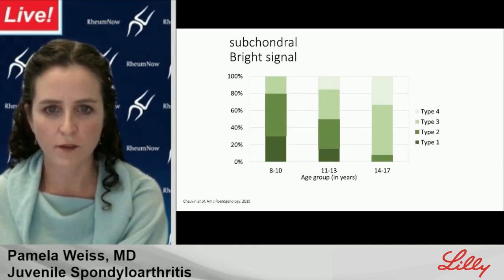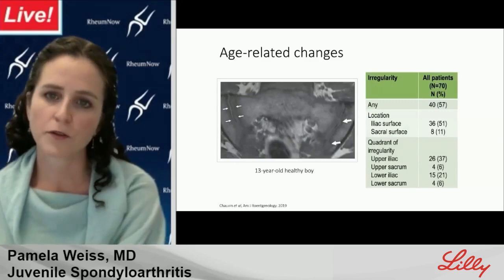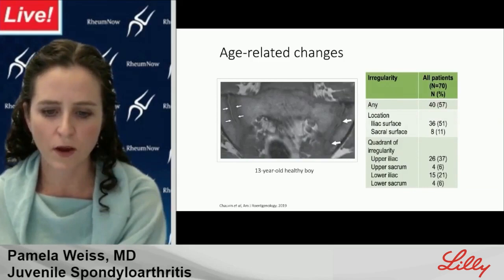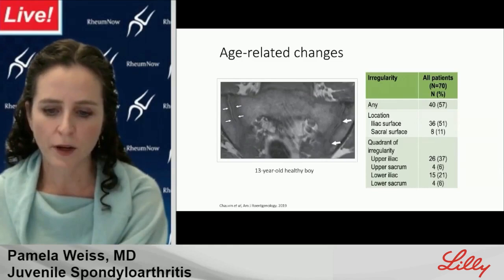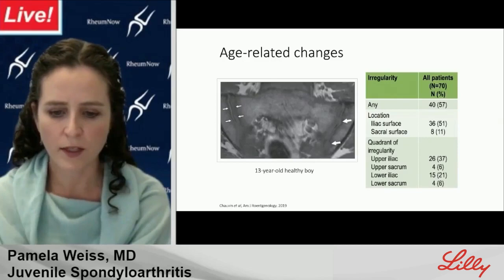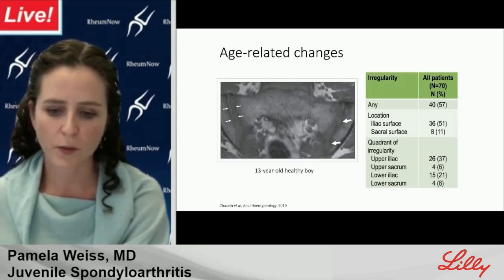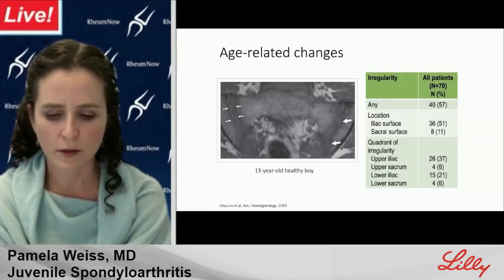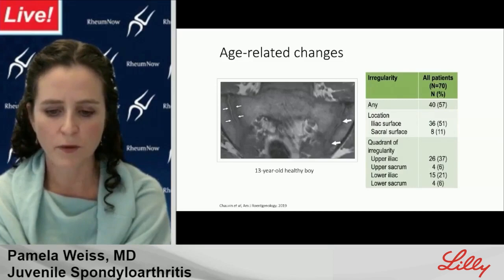MRI can also be tricky in youth for reasons beyond active inflammation evaluation. In a study of 70 healthy children, we found that SIJ cortical irregularities are really common, occurring most often along the ilium and being especially numerous in the peripubertal group. This correlates with prior autopsy findings showing sacroiliac bony surfaces are smooth until puberty, then develop bony ridges and grooves primarily of the ilium. This differs from adults, where irregularities may infer degenerative change. These are variations in normal anatomy and should not be mistaken for erosions.